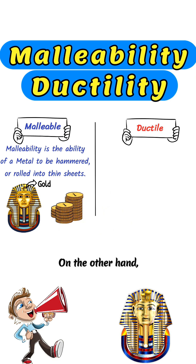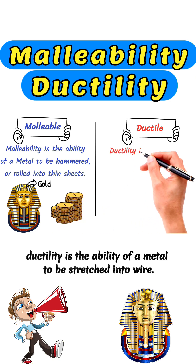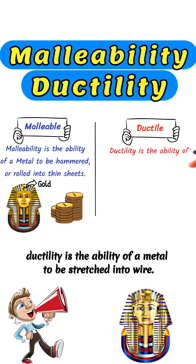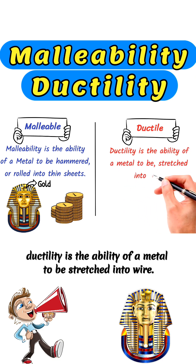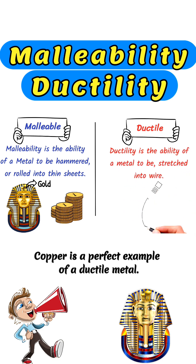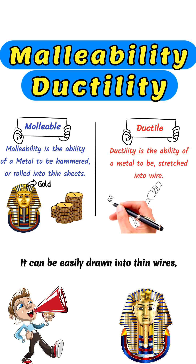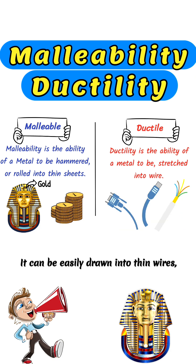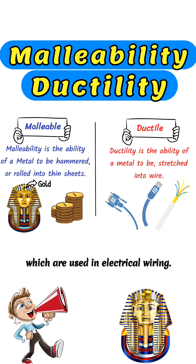On the other hand, ductility is the ability of a metal to be stretched into wire. Copper is a perfect example of a ductile metal. It can be easily drawn into thin wires, which are used in electrical wiring.